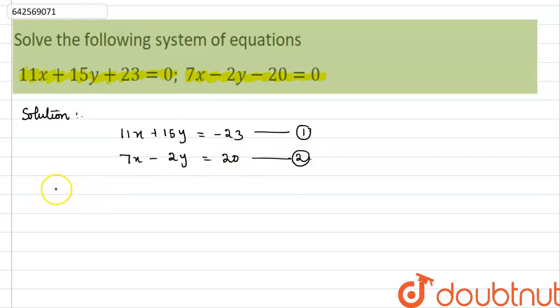Now multiply equation 1 by 7. So we will get 77x plus 105y equals negative 161. Mark this as equation 3.